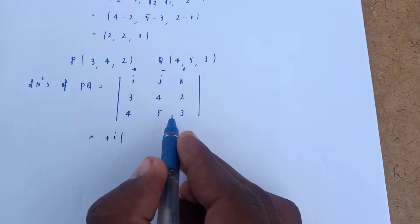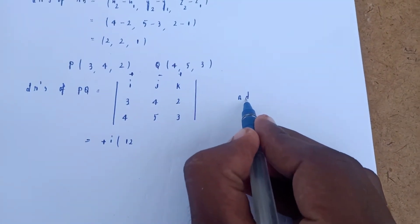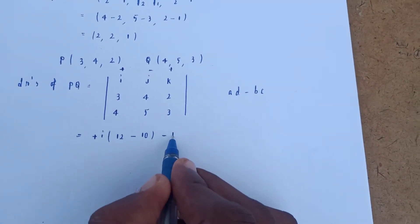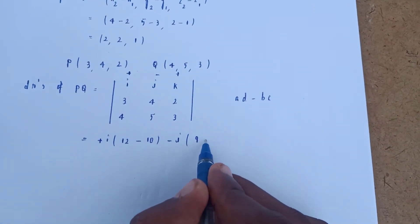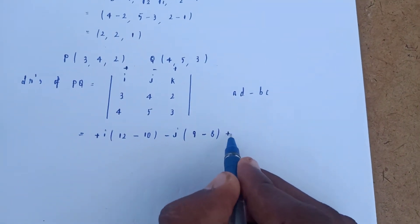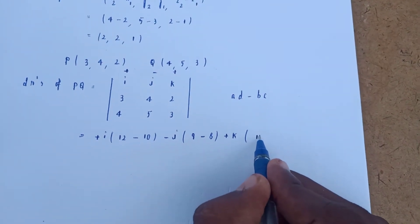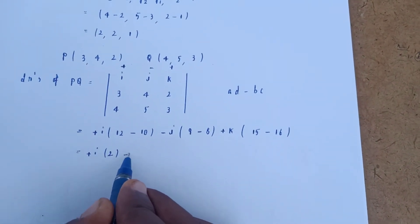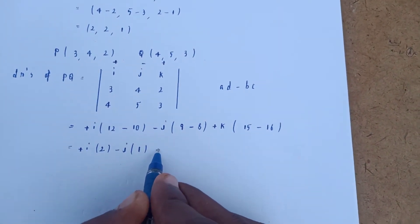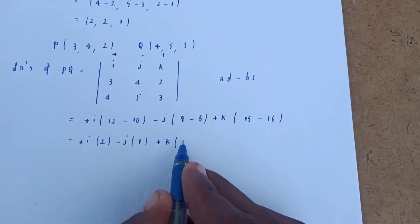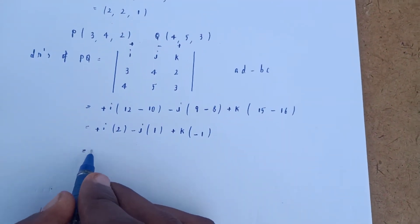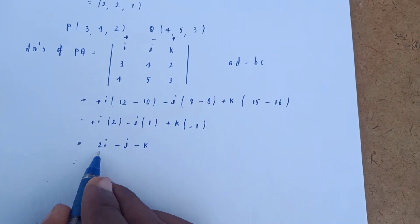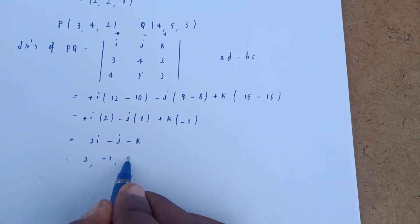Expanding: plus i of (4×3 − 2×5) = 12 − 10 = 2, minus j of (3×3 − 2×4) = 9 − 8 = 1, plus k of (3×5 − 4×4) = 15 − 16 = −1. So I = 2, J = −1, K = −1. Therefore DRs of PQ are (2, −1, −1).